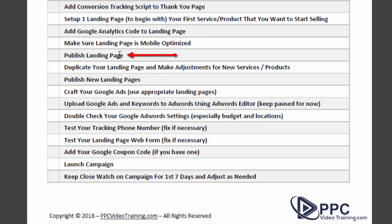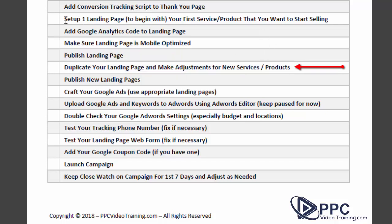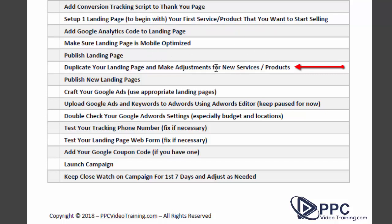Publish your landing page and go check it out live — make sure it looks correct on mobile, tablet, and desktop. At this point, if you're ready, go back and duplicate this landing page and adjust it for your other services or products: copy it, then swap out the pictures, price, service details, or whatever applies. Or you can save that step for later and just focus on getting that first one live. Once done, publish those new landing pages.